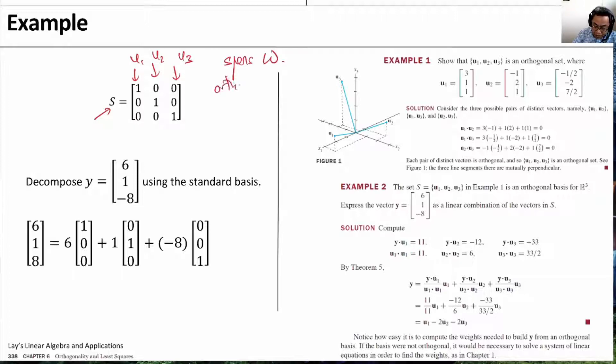They are orthogonal to each other, not only that they are actually orthonormal to each other, because U1, dotting with himself, has length 1. U1 is orthogonal to U2, U1 is orthogonal to U3, and so on.